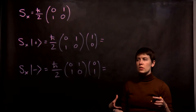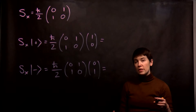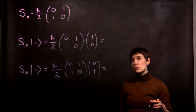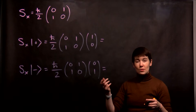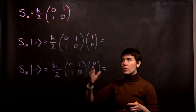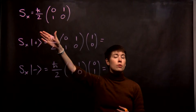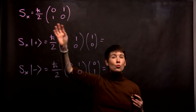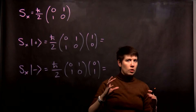In this video, I'll show you the example of applying the spin measurement in the x direction to our states in the y direction. This is our spin operator to measure the spin in the x direction, still written in the z basis.